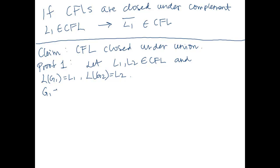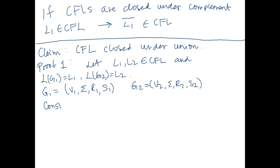Let's define G1 as a tuple of variables V1, sigma (set of terminals), R1 (set of rules), and S1 (the start variable for G1). And let's define G2 as V2, sigma, R2, S2.